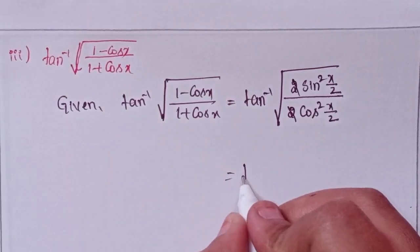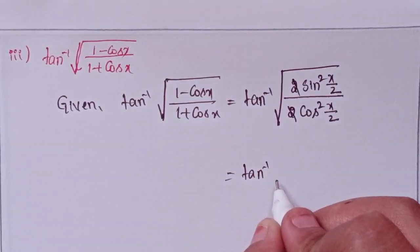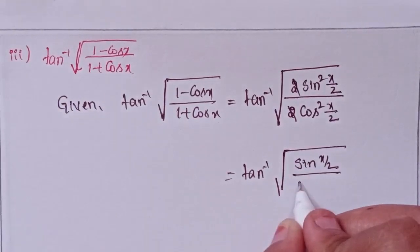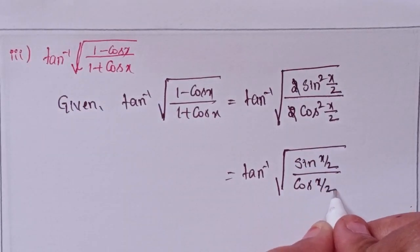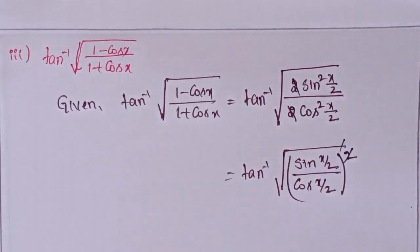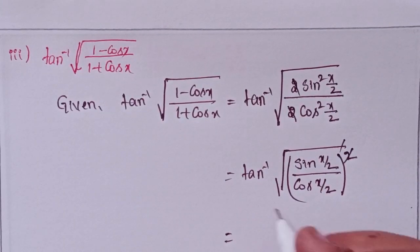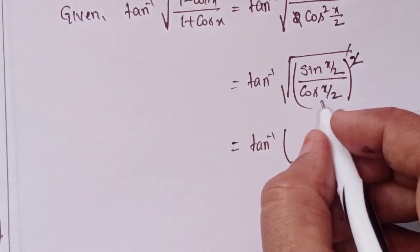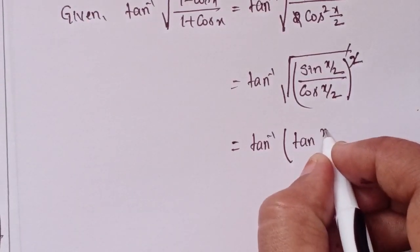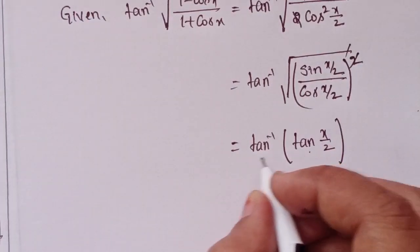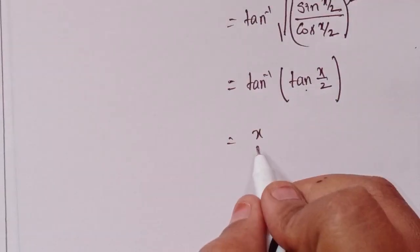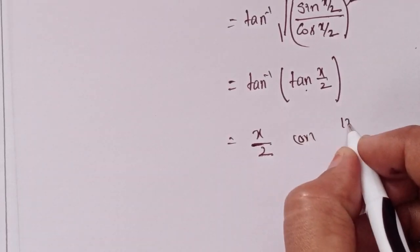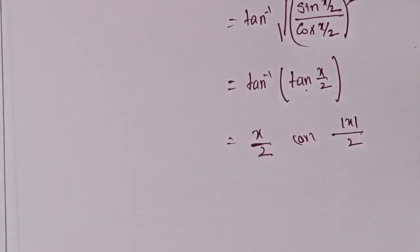Tan inverse of square root of sin²(x/2) divided by cos²(x/2). The square root cancels the square, giving tan inverse of sin(x/2) divided by cos(x/2), which equals tan(x/2). Tan inverse and tan cancel, so x/2 is the solution — or you can write plus or minus x/2.